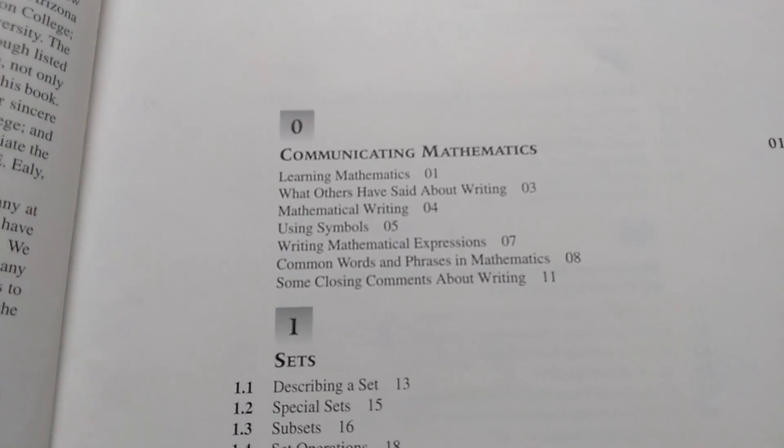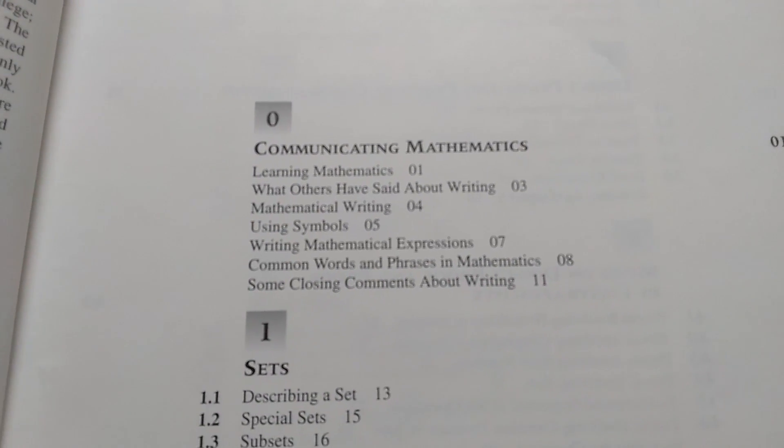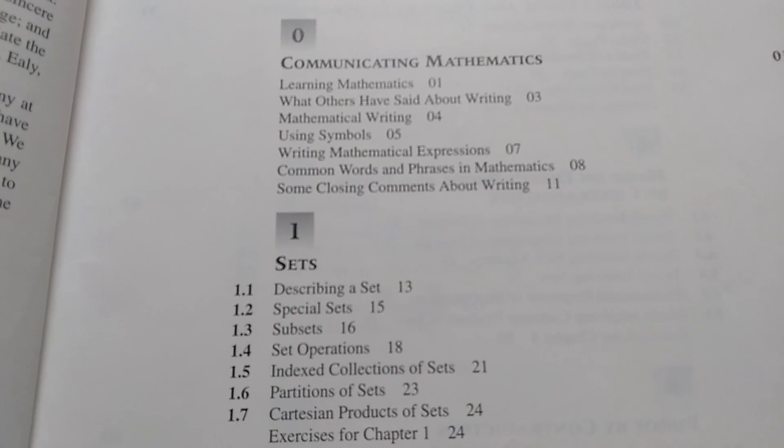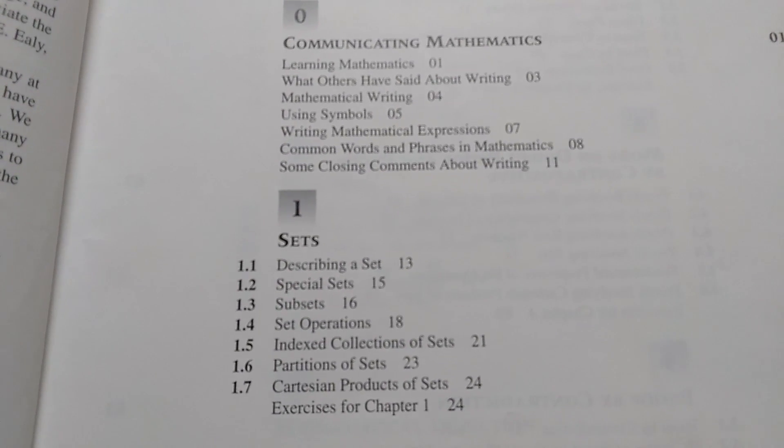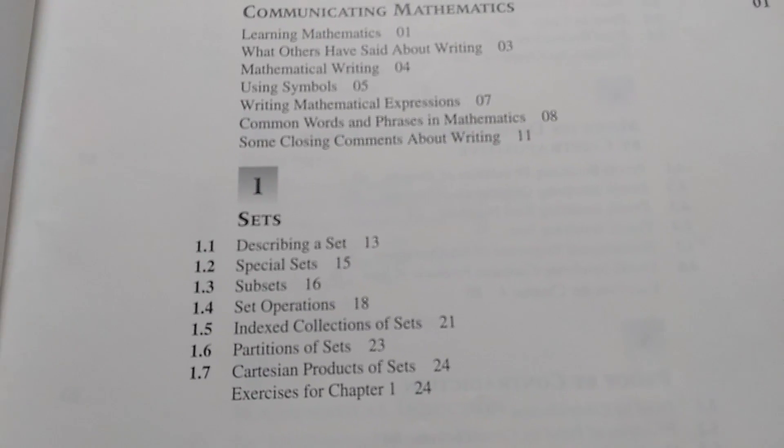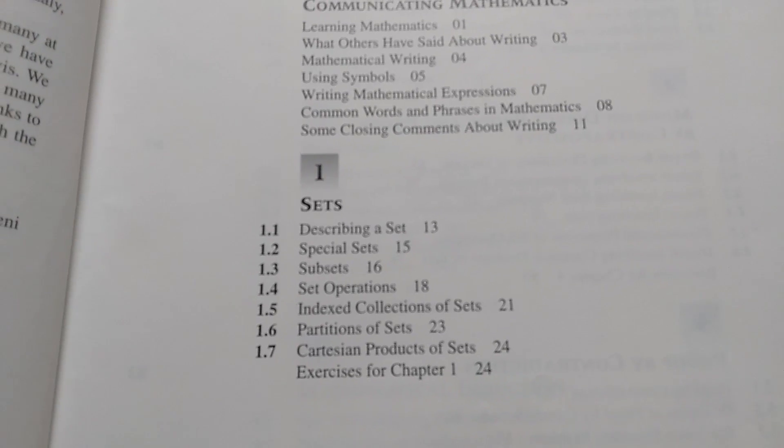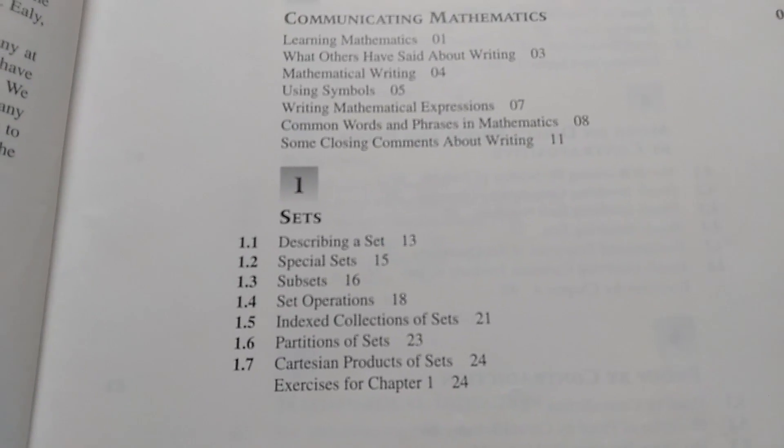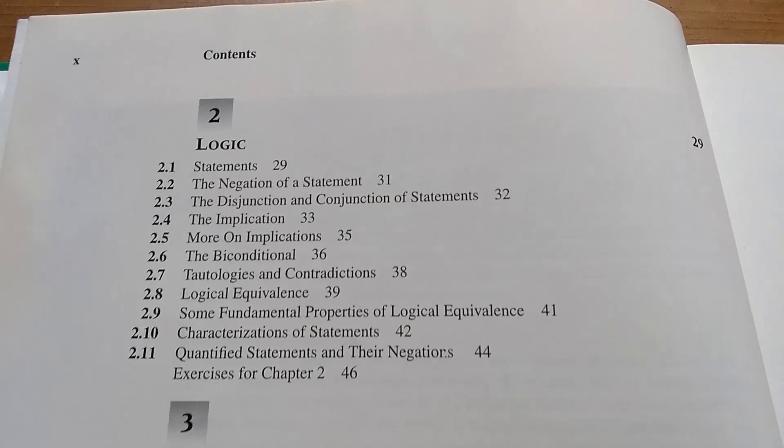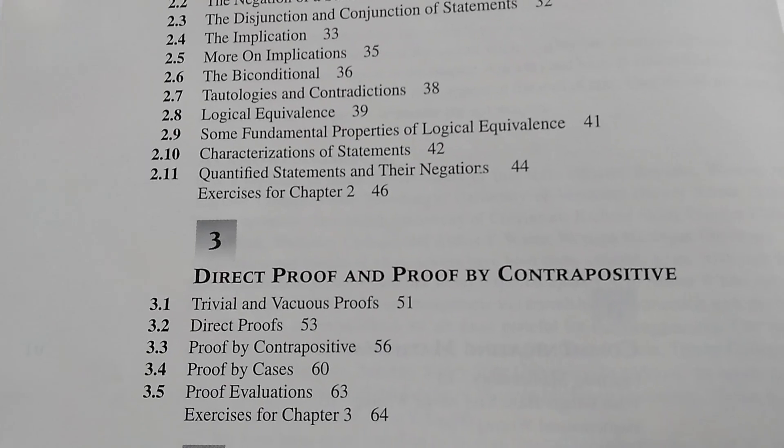The book starts with chapter zero, which the authors call Communicating Mathematics. It's quite an interesting read, and then they start with sets. I really like that the authors decide to start with sets rather than logic. Sometimes when you start with logic, it's not as interesting. You do need logic in order to do set theory, but it's nice to just jump into it and just begin with sets. Chapter two is on logic. It goes through all the basic logic stuff that you need to write proofs.